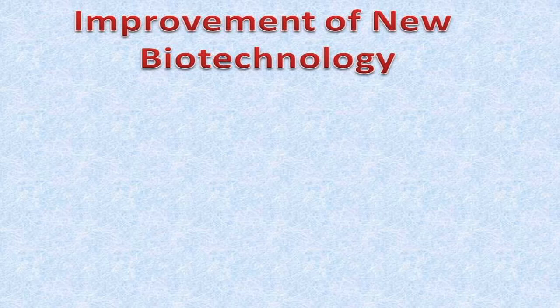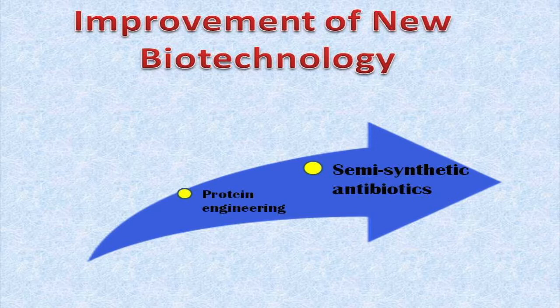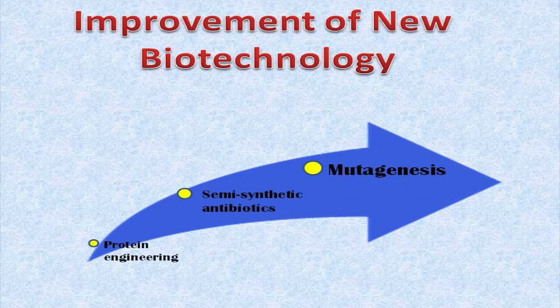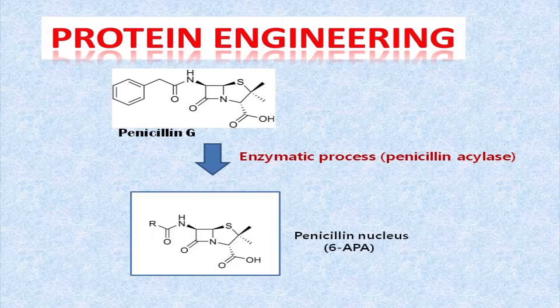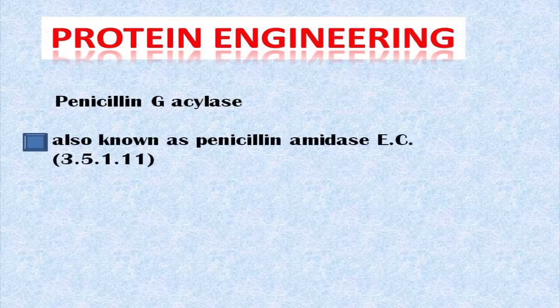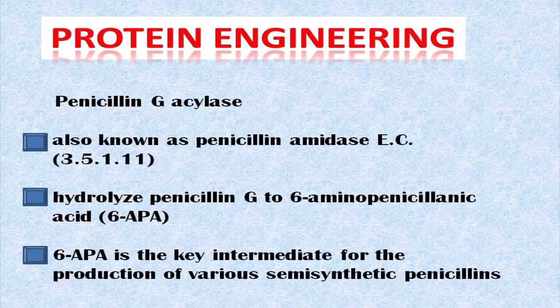All these limitations led to improvement and modification. New biotechnology, also known as molecular biotechnology, is one of the vastly used methods for improvement. Protein engineering, semi-synthetic antibiotics, and random mutagenesis are the key improvement areas for development of penicillin production. Penicillin G-acylase, also known as penicillin amidase, with EC number 3.5.1.11, hydrolyzes penicillin G to 6-APA.